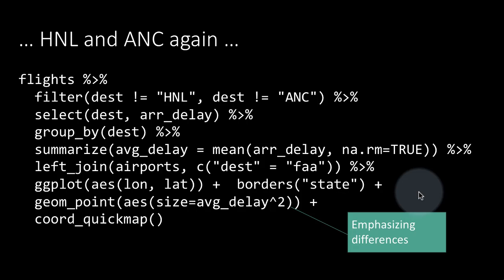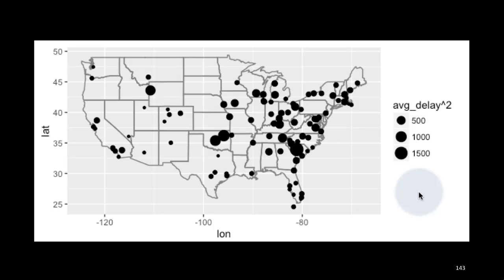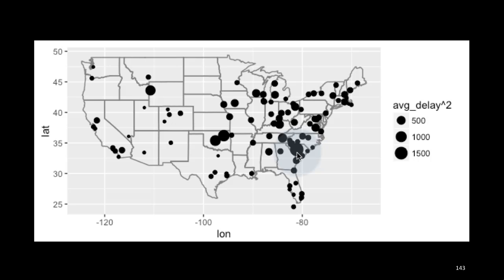When you do that, you get a plot that looks like this. We left out the color and are just showing it by the size, and now you get a good picture of which airports have higher delays. We have to be clear that the size is proportional to the square of the delay, not to the delay itself — so this is a dramatized version. The largest point is probably Atlanta, or possibly Charlotte, and you can see some airports which have notably higher delays.